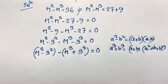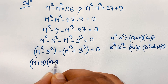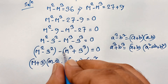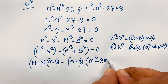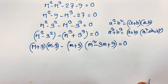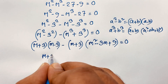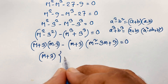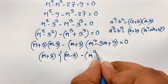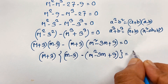Now I apply this formula here, so it will be m plus 3 times m minus 3, plus m plus 3 times m squared minus 3m plus 9, is equal to 0. Now m plus 3 is common, so if I take m plus 3 as common, it will be m plus 3, then dividing: m minus 3, and dividing the other: minus m squared minus 3m plus 9, equal to 0.